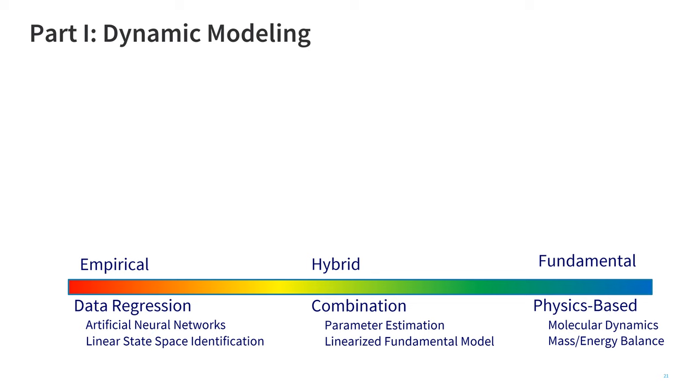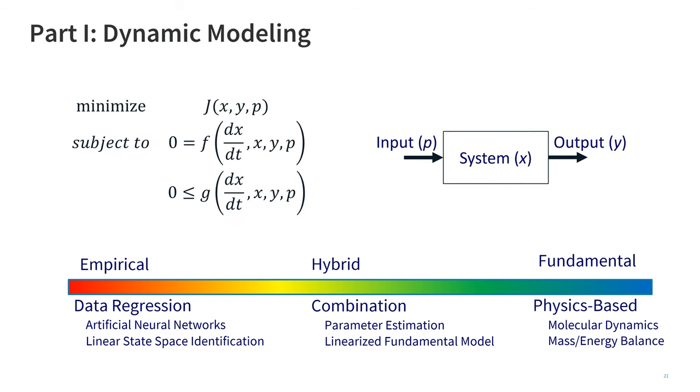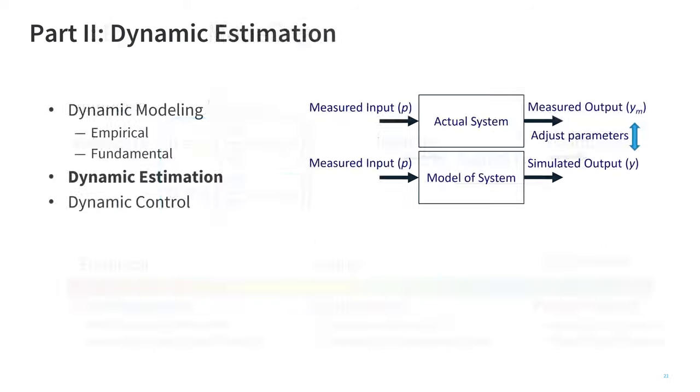So just focusing a little bit more on the dynamic modeling, we're going to have a range between empirical and fundamental using regression, physics-based methods, or combination, which is the hybrid approach I mentioned. So you have the input and output. And we're going to be minimizing subject to these constraints. Now, in this case, we don't really have an objective function with simulation. We just have those equations that we're going to be solving to determine the values of x and y.